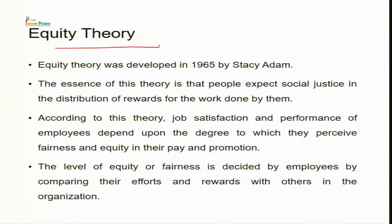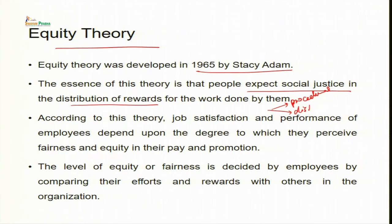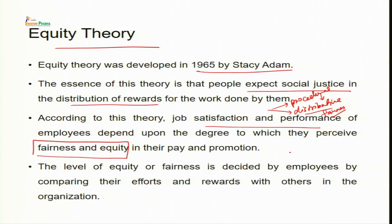The first theory, equity theory, was given by Stacey Adams in 1965. The essence of this theory is that people expect social justice in distribution of rewards. This distribution can be done by two ways: procedural justice and distributive justice. Distributive justice means fairness in distribution of the reward, while procedural justice means the procedure to decide the distribution is fairly accounted for. Job satisfaction and performance depend upon the degree to which employees perceive fairness and equity in their pay and promotion.